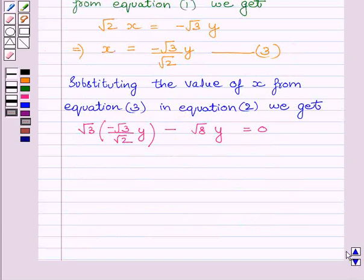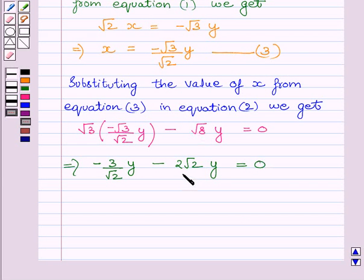This implies minus 3 upon root 2y minus 2 root 2y is equal to 0. Root 8 is equal to 2 root 2, so we have written it equal to 2 root 2 here.